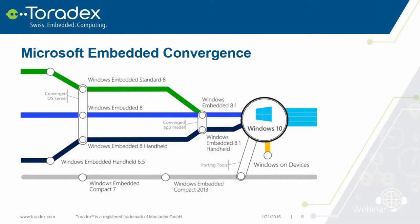In the middle is Windows Embedded Handheld, which was originally very close to Windows CE with the same kernel and very similar APIs. They later changed to use the kernel from the big Windows, and then they put the application models together, now trying to make everything very uniform in Windows 10. You have different versions of Windows 10, which we will see on the next slide.